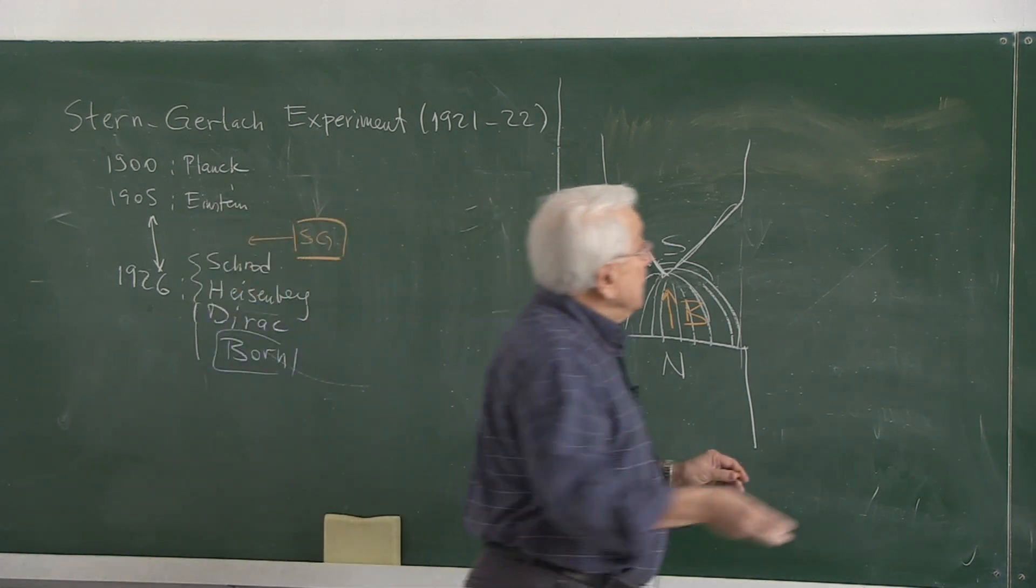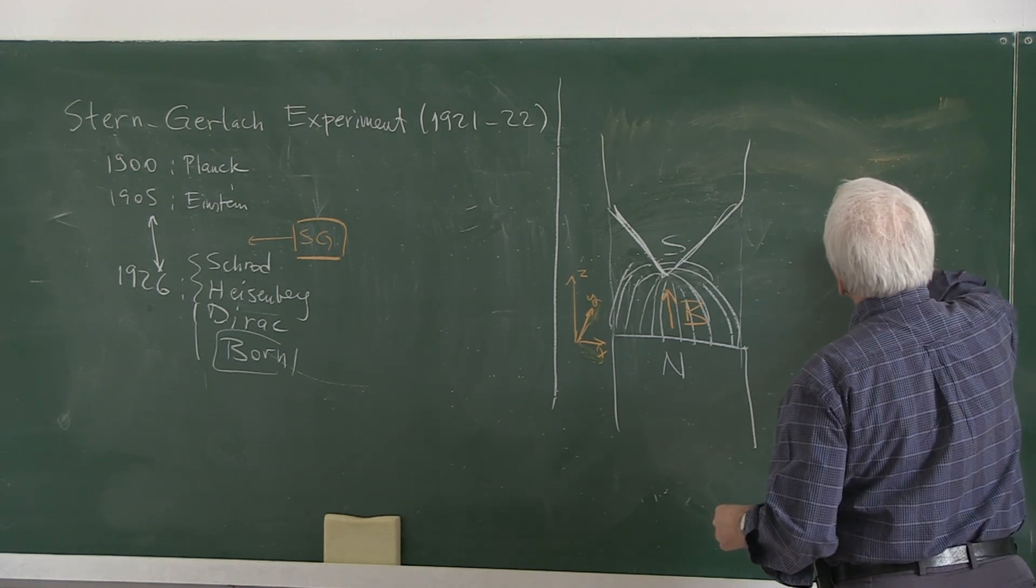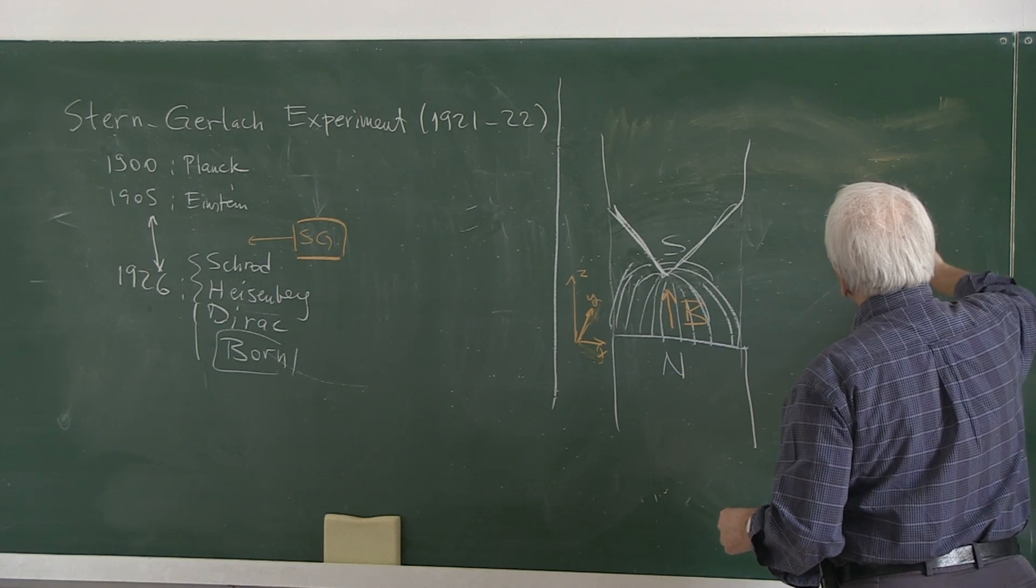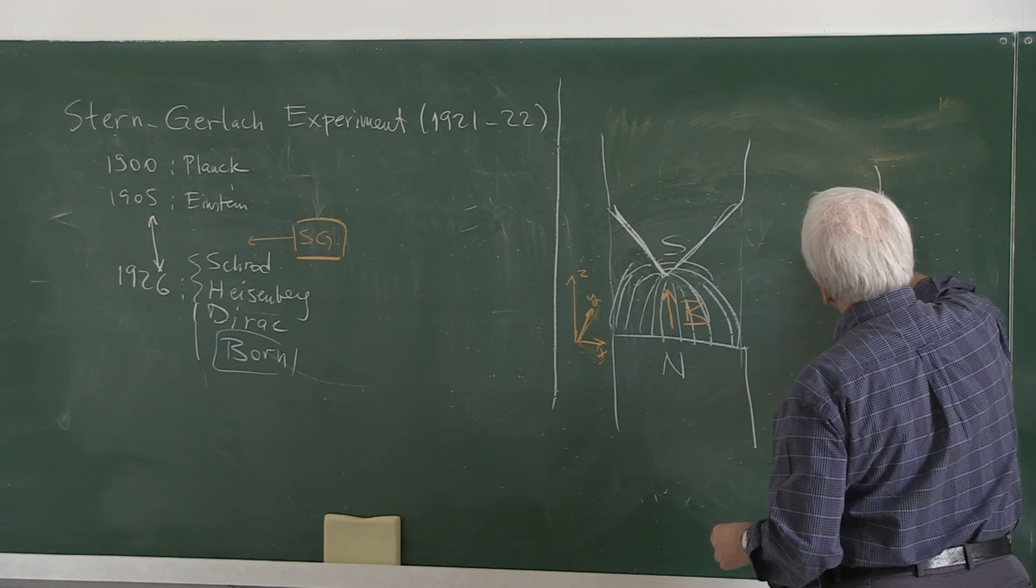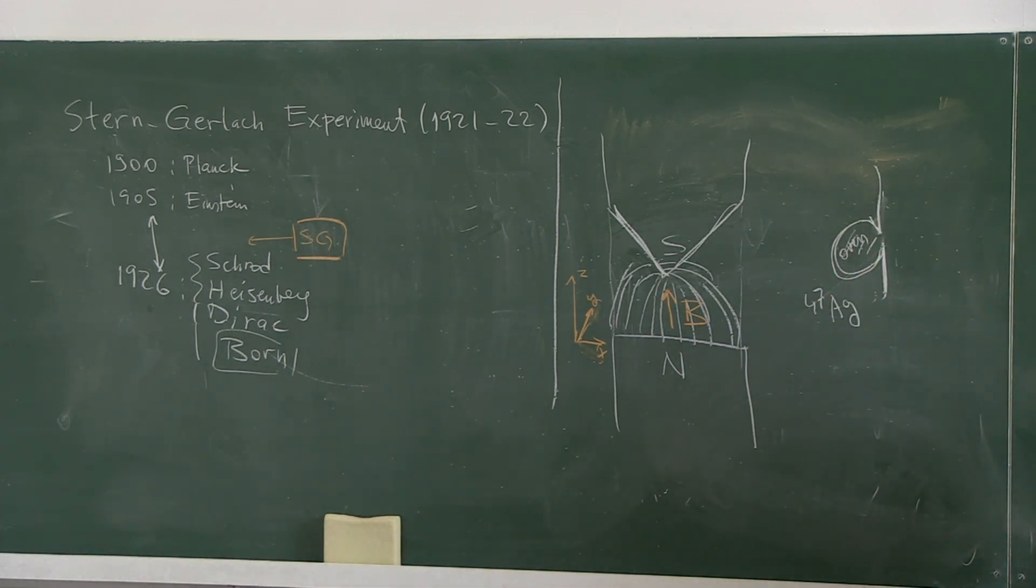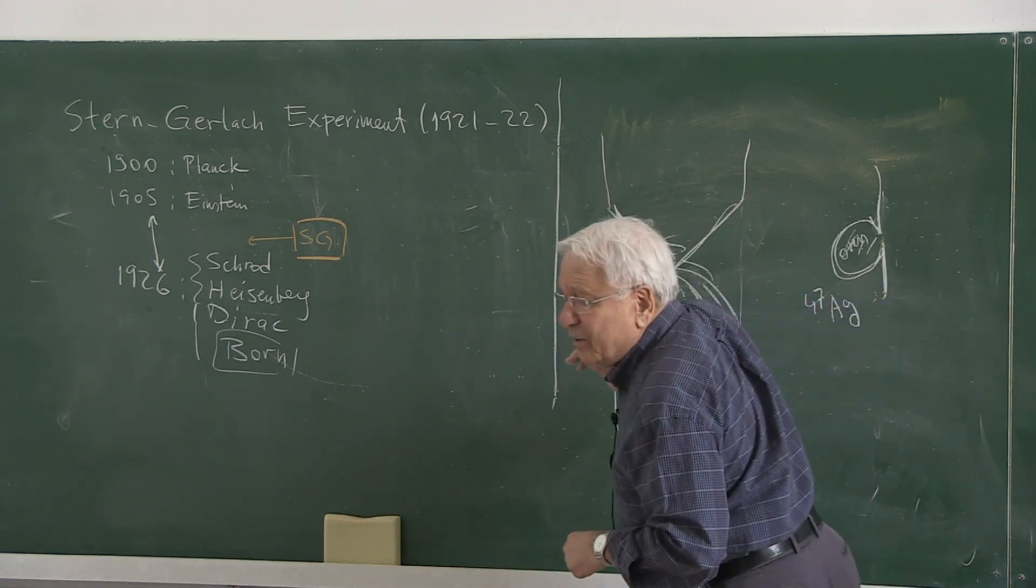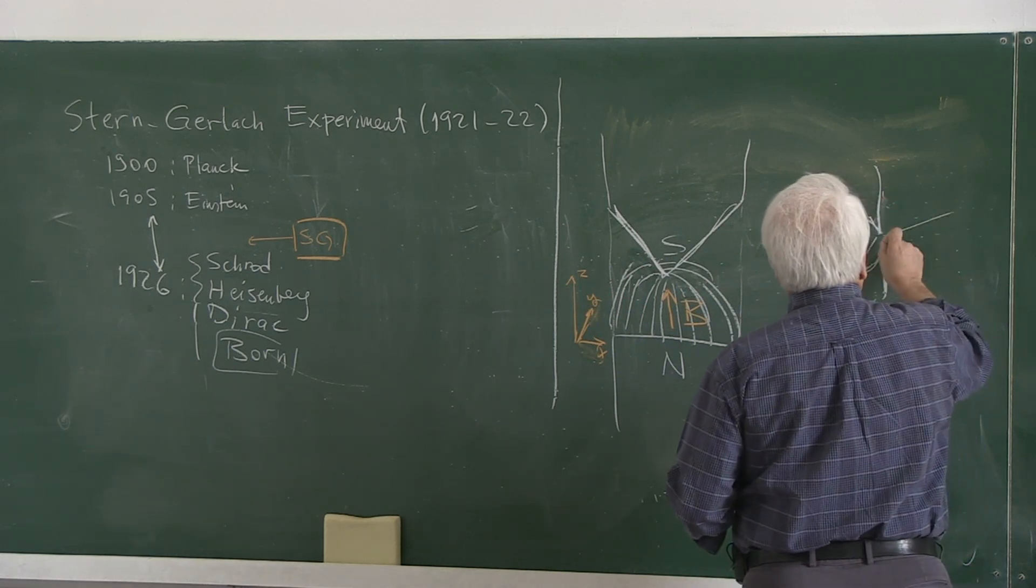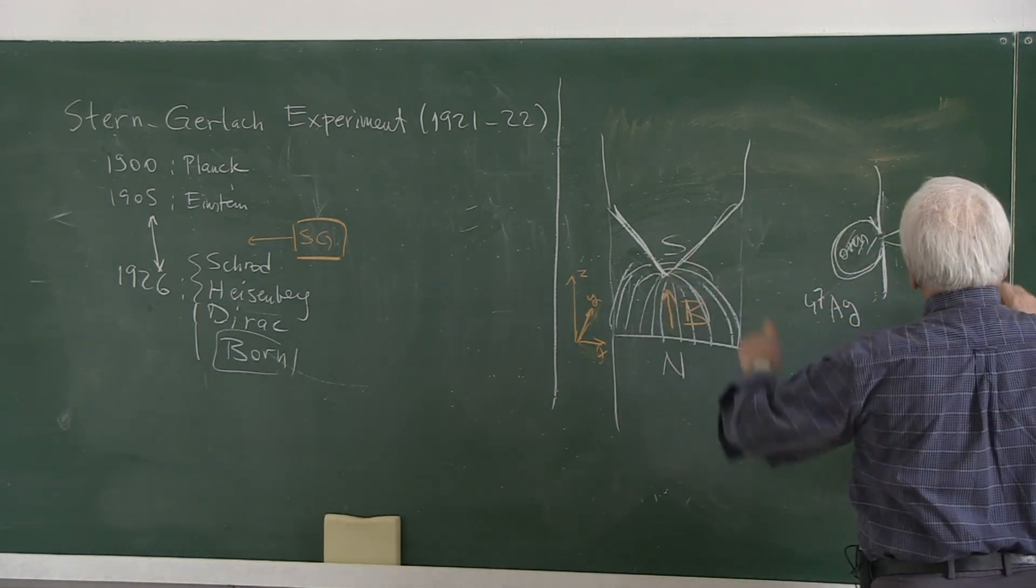Here is the oven and in this oven they are heating the silver atoms. There are silver atoms in here. Silver atom has the atomic number 47 and that many neutrons as well. So the atomic weight is different. There is a collimator in the front here and they come out of that oven and they go through this Stern-Gerlach gadgetry.